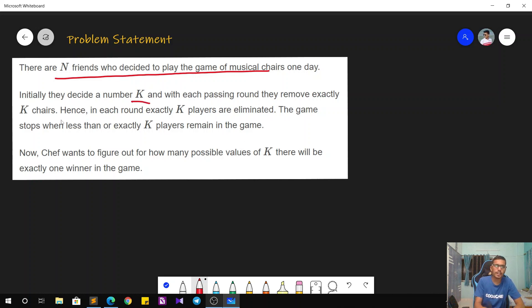So in total there were N chairs in the beginning of the game, and the friends have mutually decided a number K such that K chairs will be removed at the end of each round. After the first round we will remove K chairs, after the second round again we will remove more K chairs, and so on. The game stops when less than or exactly K players remain in the game.